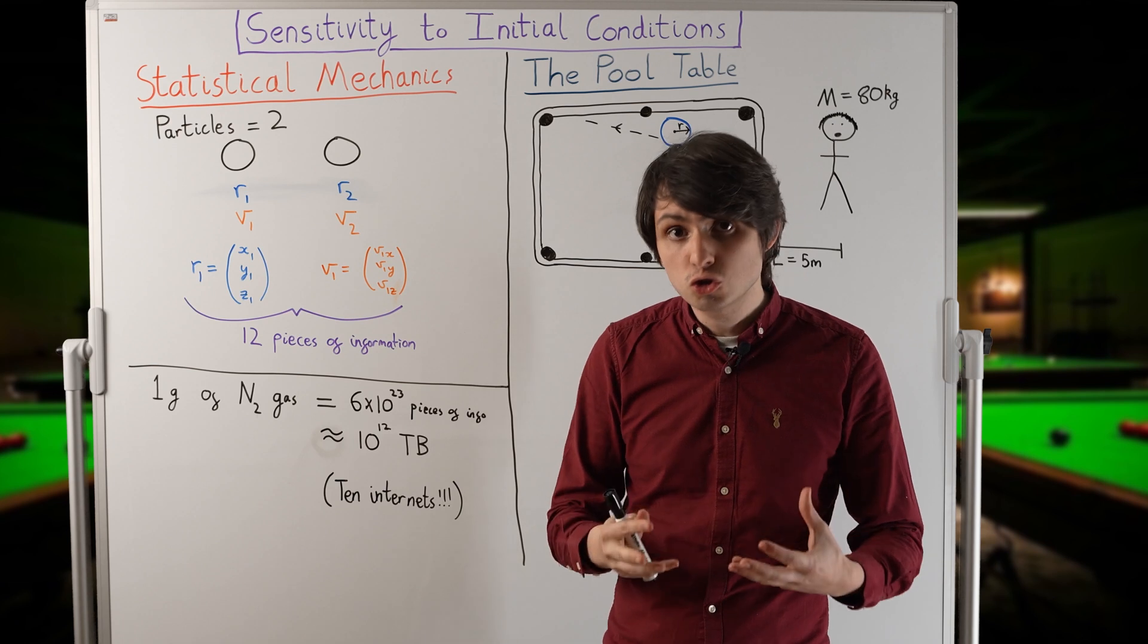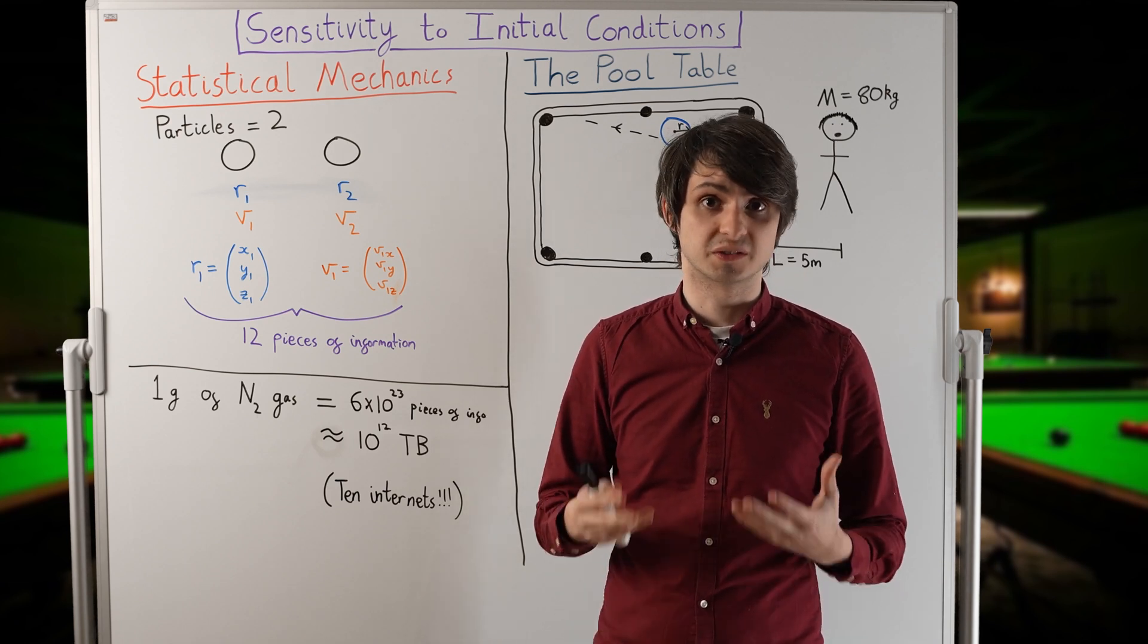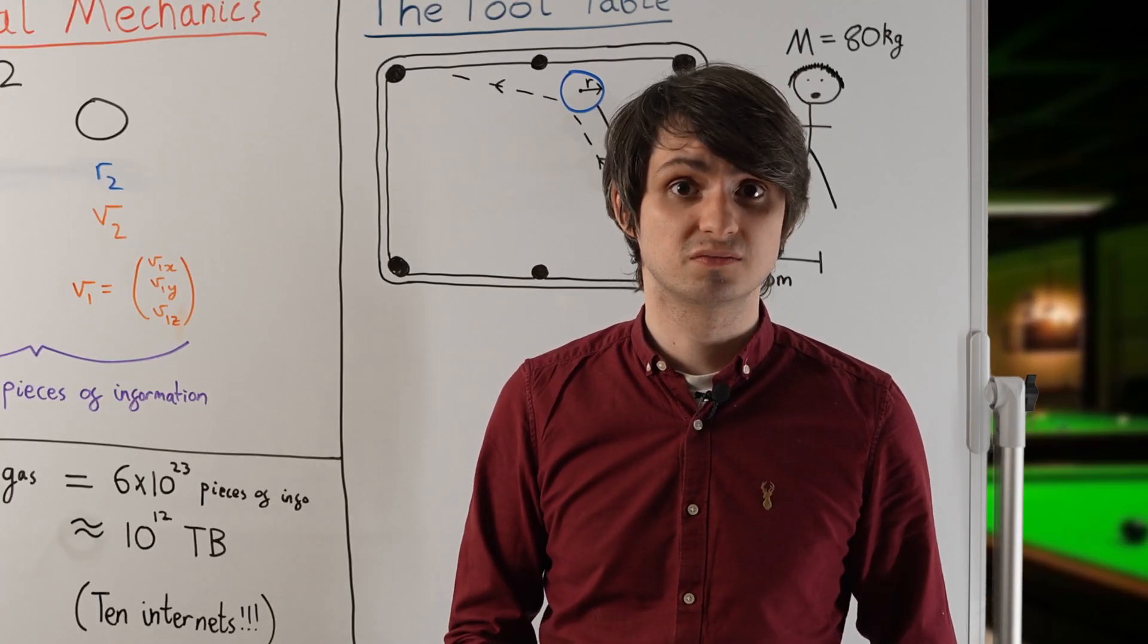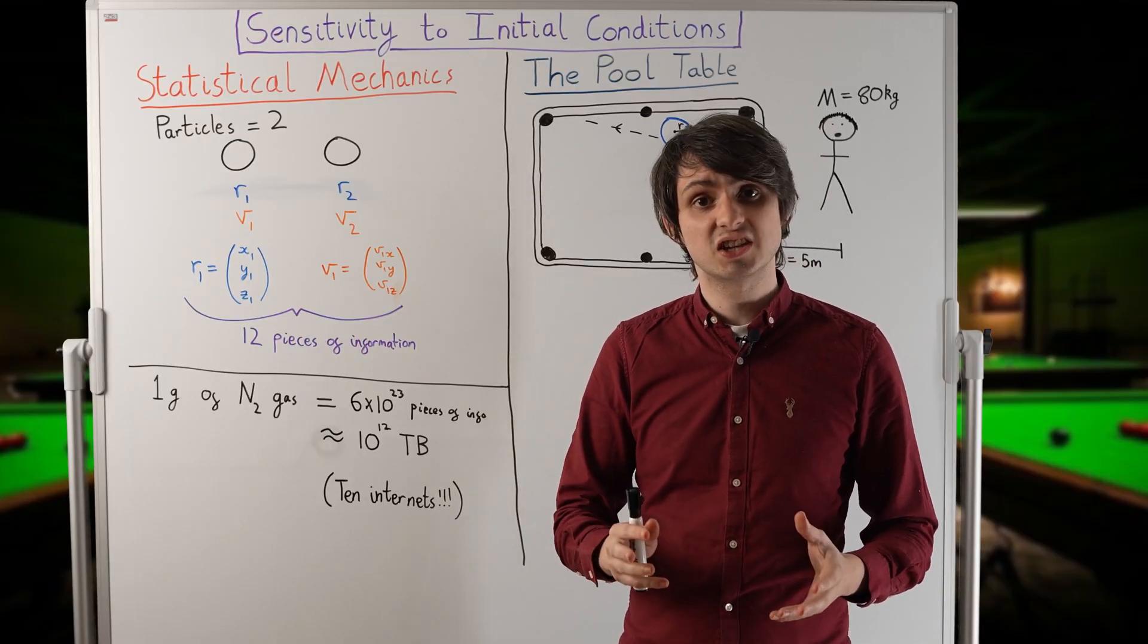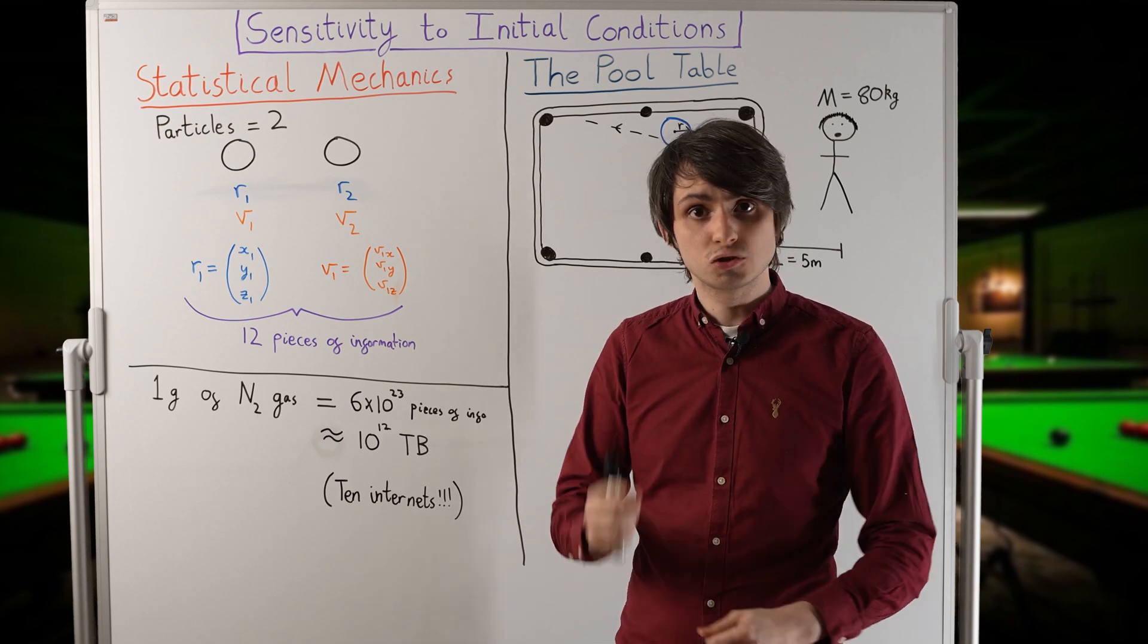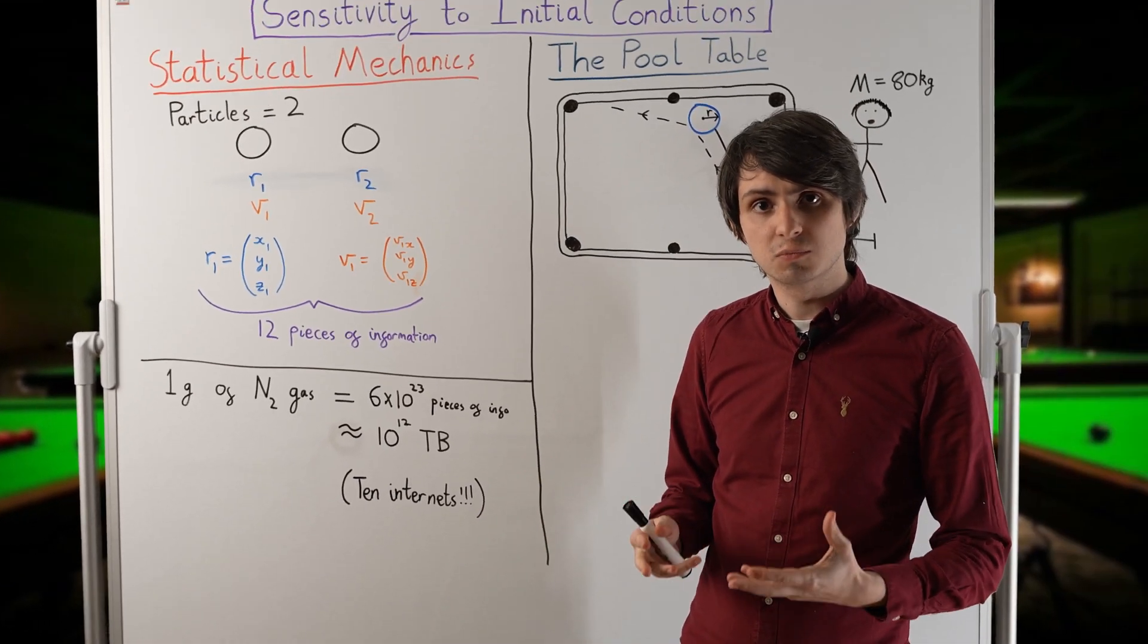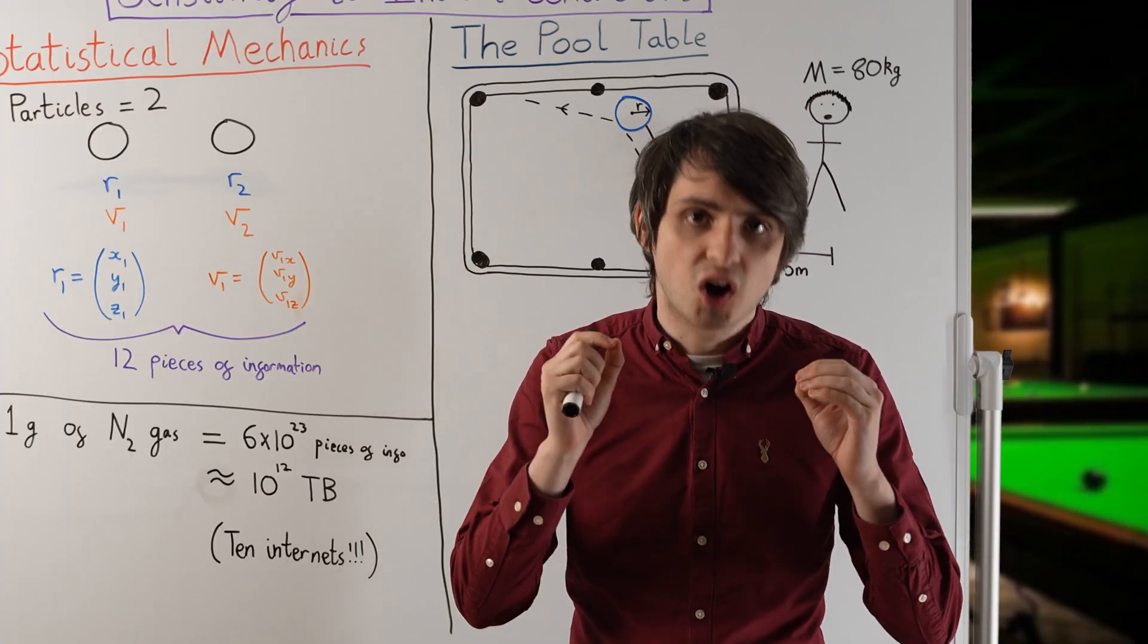To put that into perspective, a good computer hard drive these days can store around one terabyte of data. So to model a single gram of nitrogen gas, you need a trillion computers. To put it another way, it's estimated that the entire internet contains around 10 to the 11 terabytes of data. So to model a single gram of nitrogen gas, you'd need 10 internets. In other words, trying to model large systems using Newton's laws directly is completely hopeless.